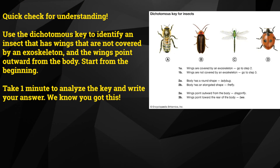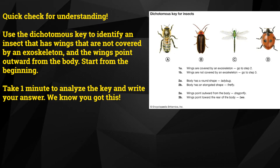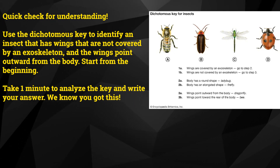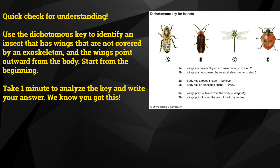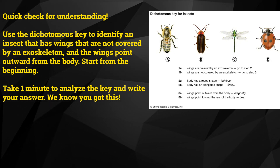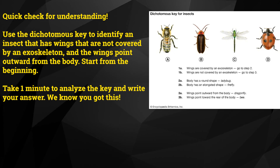Quick check for understanding: use the dichotomous key to identify an insect that has wings that are not covered by an exoskeleton and whose wings point outward from the body. Start from the beginning. Take one minute to analyze the key and write your answer. We know you got this.